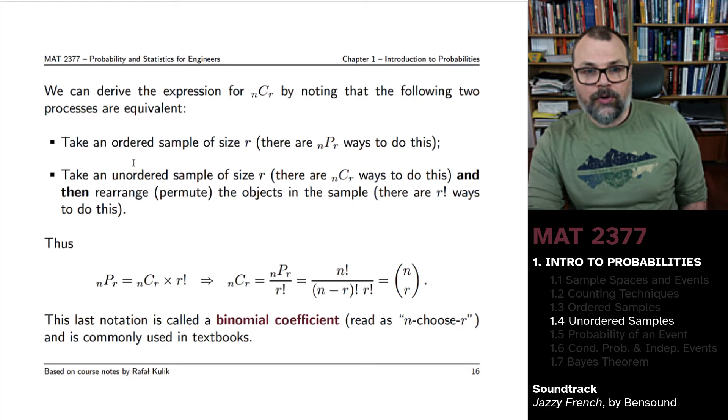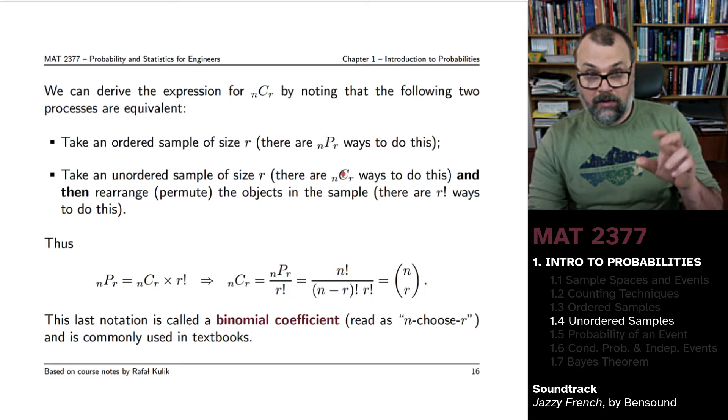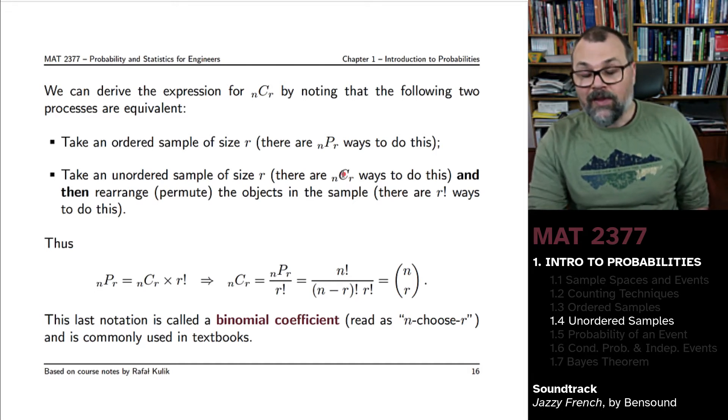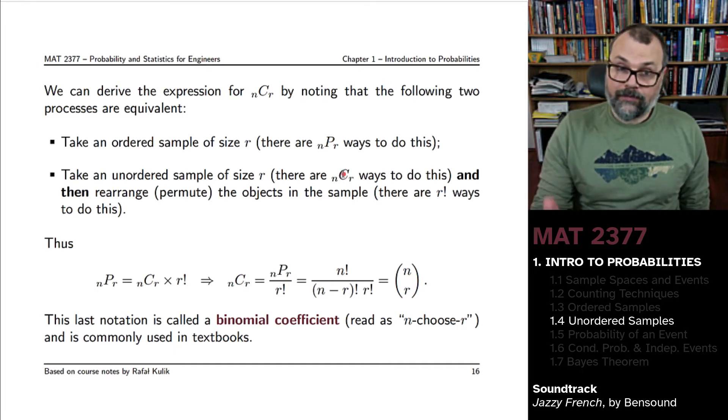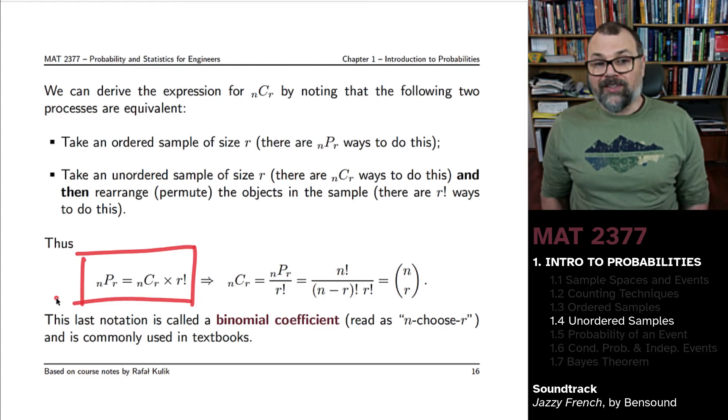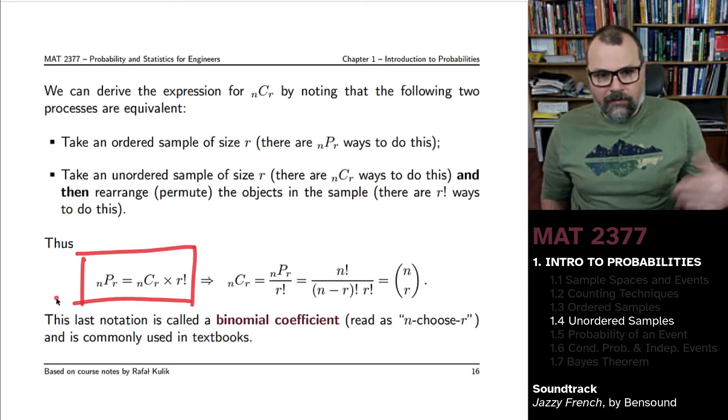So what this is telling us is that if the order matters, you use nPr. If the order doesn't matter, there's nPr ways of picking the r objects in your sample, and then there's r factorial ways of permuting the thing to get different orders. These two things are equivalent, so nPr should equal nCr times r factorial. You can solve for nCr.